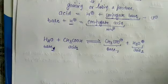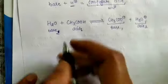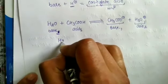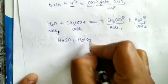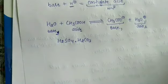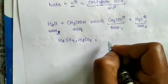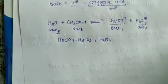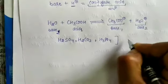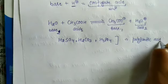Some acids have the ability to give more than one proton. Acids that can give two protons include sulfuric acid and hydrogen carbonate. Acids that can give three protons include H₃PO₄ (phosphoric acid). These are called polyprotic acids.